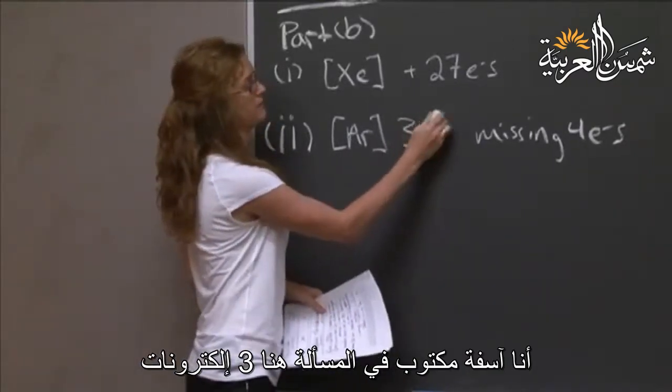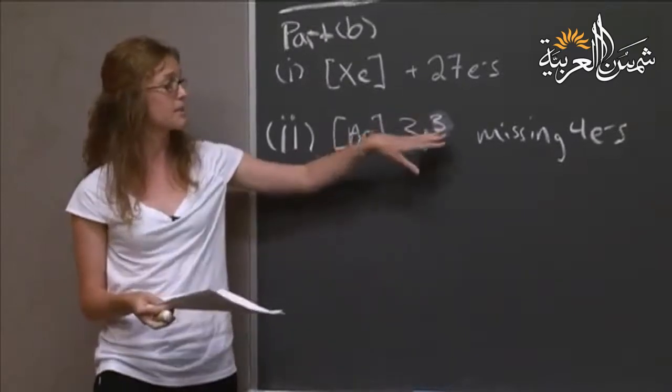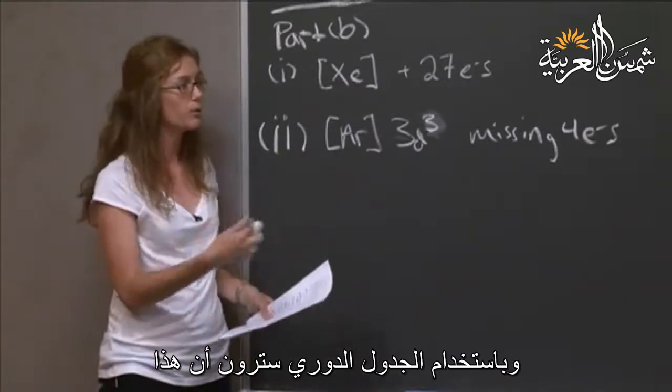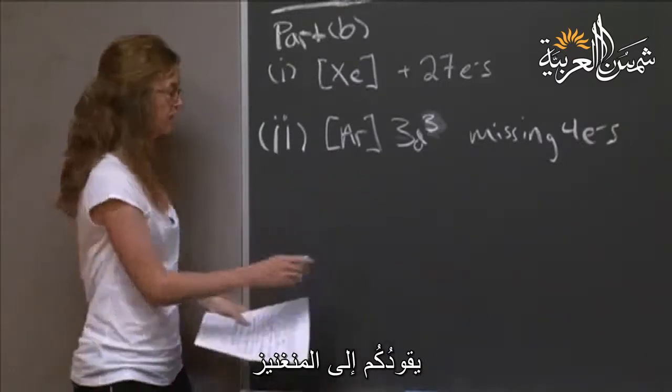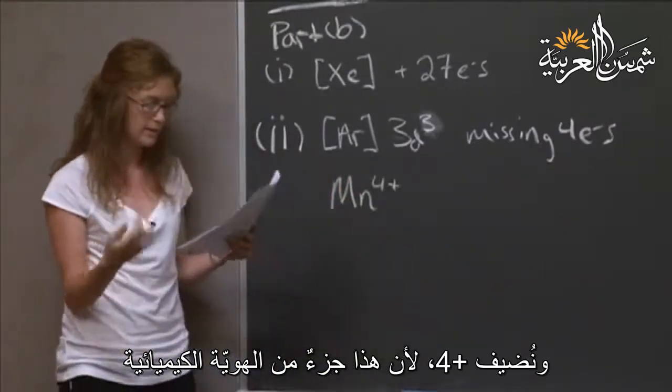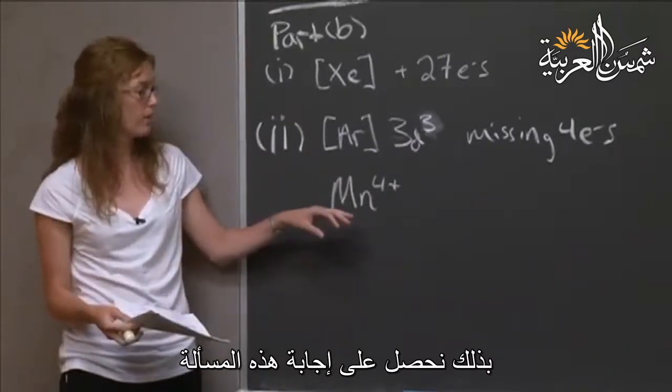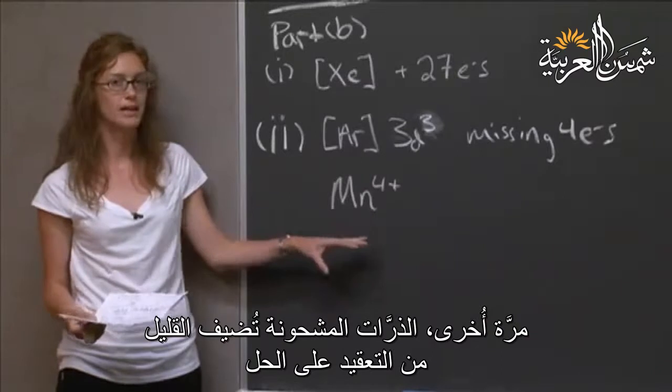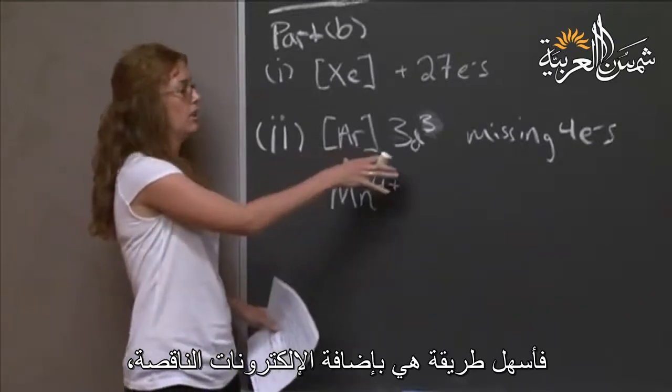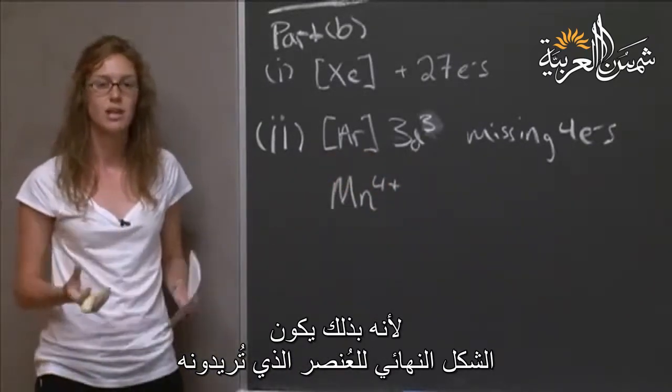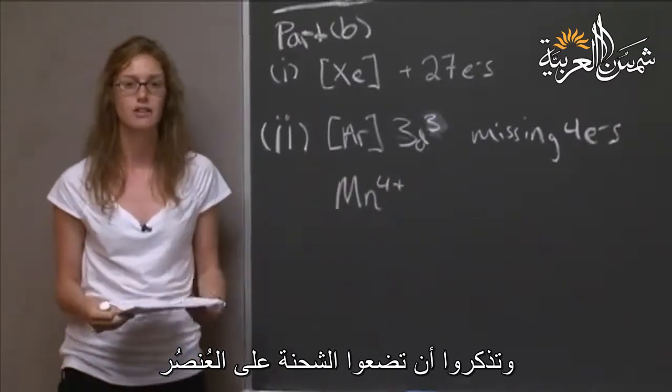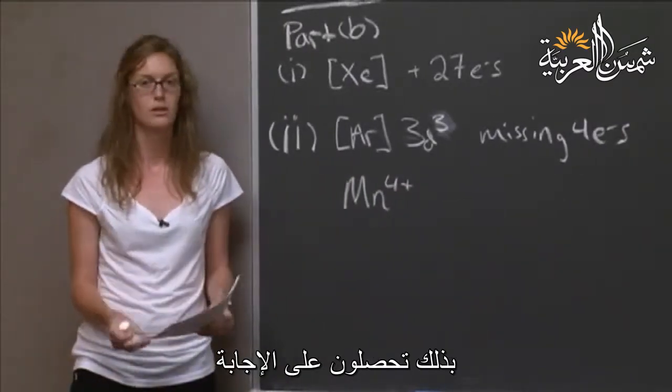Instead of plus 5 electrons, we are going to go to argon plus 7 electrons. And going through the periodic table, you'll see that that leaves you with manganese. Adding the 4 plus, because that is part of this chemical identity, we get the answer of the problem. The charge species makes this a little more complicated. The easiest way is to go back and add in the missing electrons, because that is your chemical species. And then remember to signify that there actually is that charge for your answer.